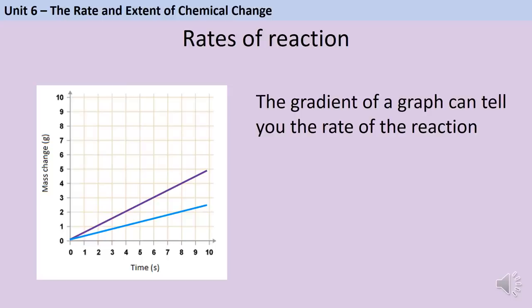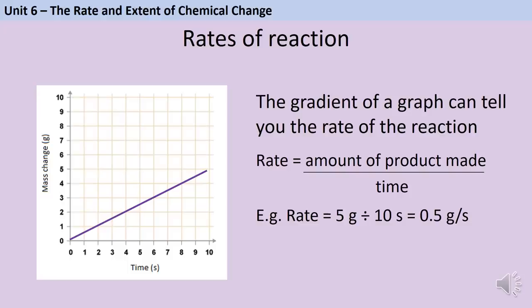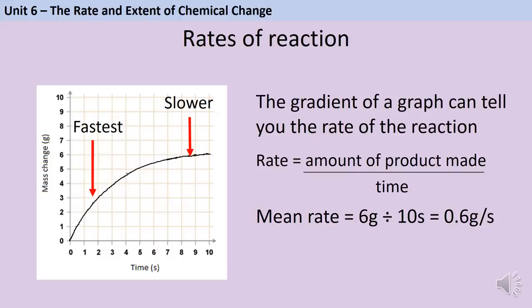You need to plot raw data onto a graph and interpret graphs. On a rate graph, the gradient or steepness tells you the rate. The purple line has a faster rate than the blue line because it has a steeper gradient. Where the gradient is constant, the rate is constant. On a curved graph the rate is changing — steeper at the start means a faster rate, then it gradually slows. To calculate the rate numerically, divide the change in the y-axis by the change in the x-axis: for example, 5 grams divided by 10 seconds gives 0.5 g/s.